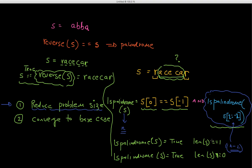This is the intuition I wanted to give you about palindromes. With this approach, we've addressed both key ideas of recursion: reducing the problem size and converging to a base case. As the recursive problem gets smaller — n, n-2, n-4, n-6 — it will eventually hit one of these base cases and be solved non-recursively. Take this intuition and implement it in Python, and keep practicing to build a solid understanding.